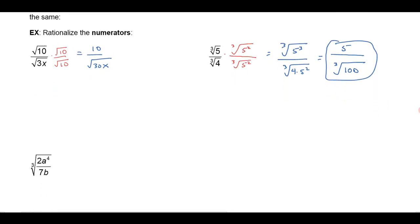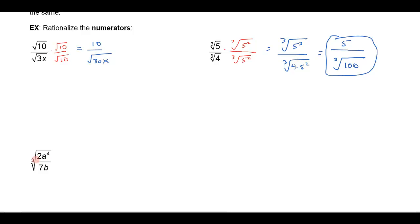One more example of this. If I have the cube root of 2a to the 4th over 7b, notice that there's already a perfect cube factor in 2a to the 4th. So let's first of all write this as a cubed times 2a in the numerator over 7b, and then let's multiply by what I need to make that numerator be a perfect cube.